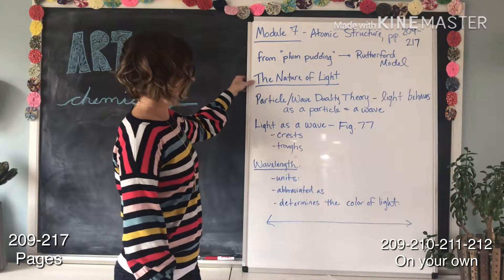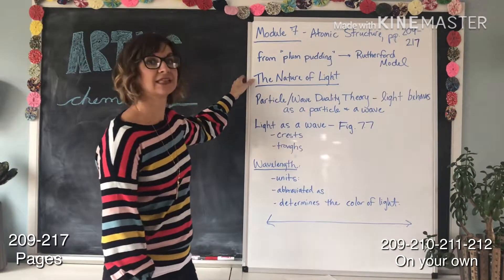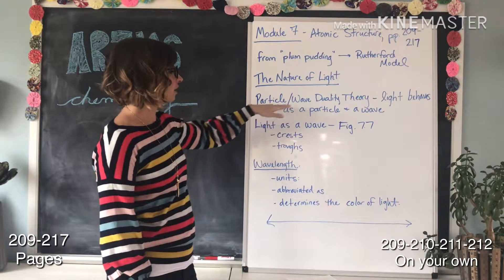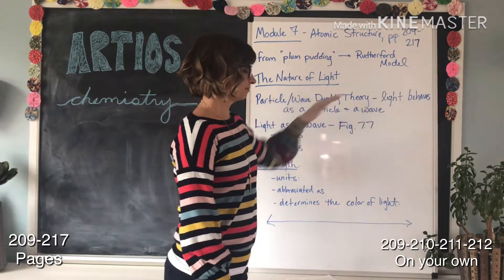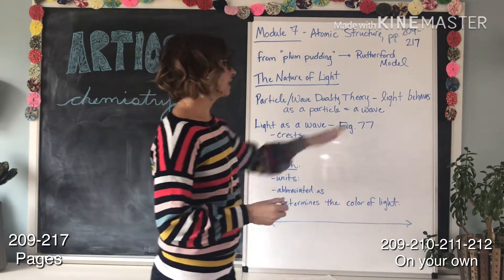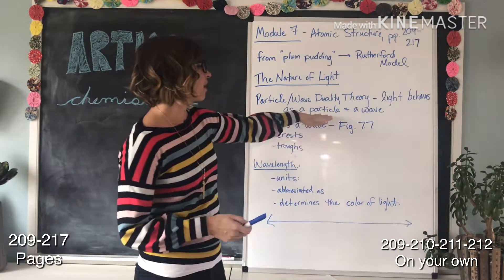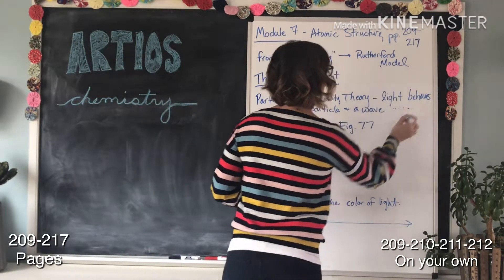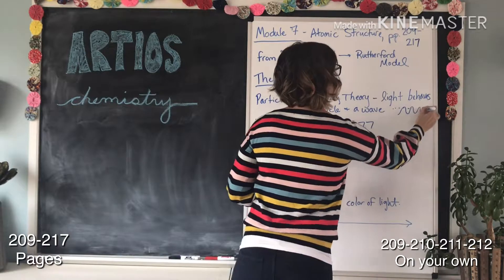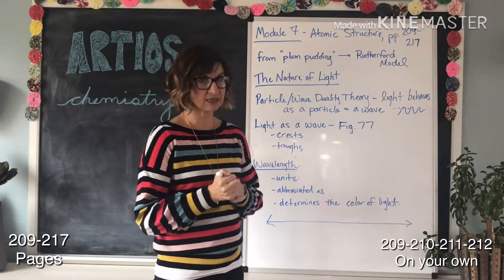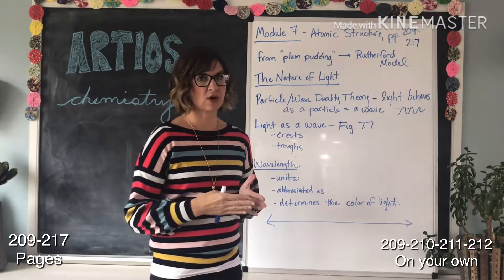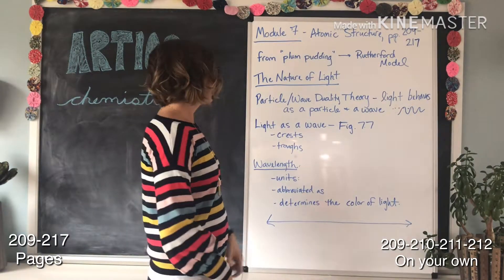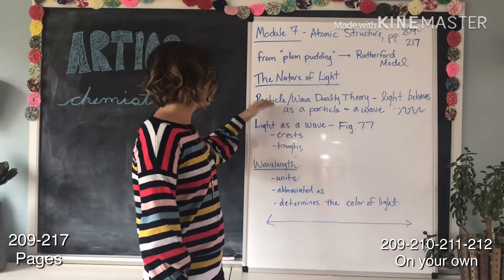We are beginning today with notes on the nature of light. First, there is the particle-wave duality theory. This states that light behaves as both a particle and a wave. Light can travel or behave as particles, and it also behaves as a wave — which is a little tricky to understand, but sometimes we have to bend our minds to accept that. That's the particle-wave duality theory.